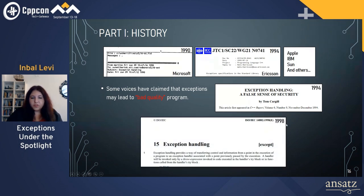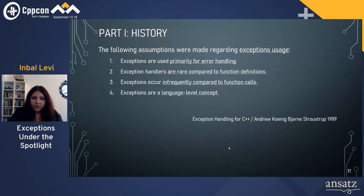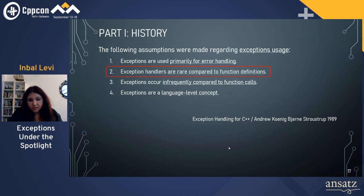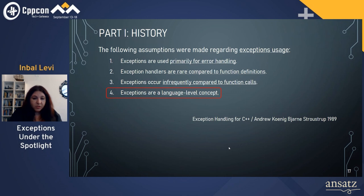Nevertheless, the exception mechanism was accepted into the first C++ standard. The following assumptions were made in the original design: exceptions are used primarily for error handling; exception handlers are rare compared to function definitions; exceptions occur infrequently compared to function calls; and exceptions are language-level concepts.